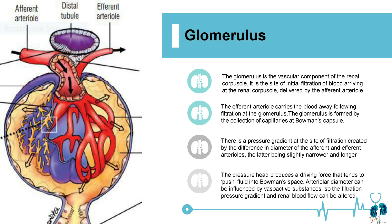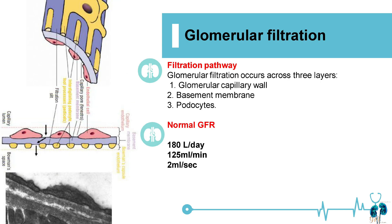The pressure head produces a driving force that tends to push fluid into Bowman's space. Glomerular filtration occurs across three layers: first, the glomerular capillary wall; second, the basement membrane; third, podocytes. Normal GFR is 180 liters per day, or 125 ml per minute, or 2 ml per second.